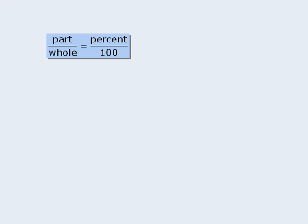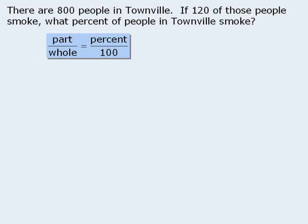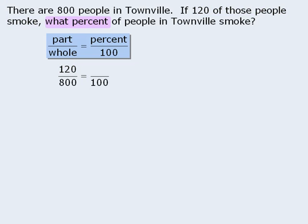Now let's apply this rule to the original question. We must first identify the part, whole, and percent. We are told that there are 800 people in total, so 800 must be the whole. Since 120 is the portion of the population that smokes, 120 must be the part. Our goal is to find the corresponding percentage, so let's let x represent the percent.